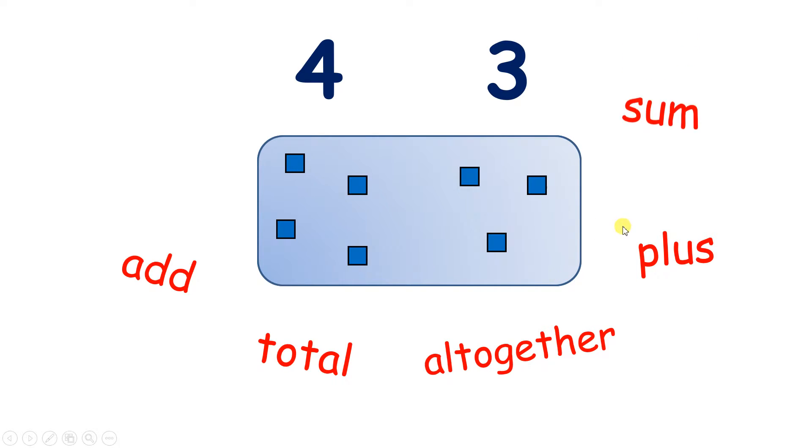We could say what is the sum of four and three. Now we don't say what is four sum three. We say sum of and then the numbers. So here we have the sum of four and three. We could say what is three more than four or four more than three. All of these mean the same thing.